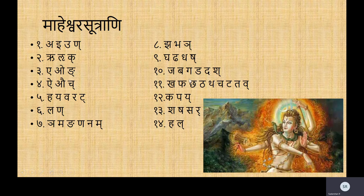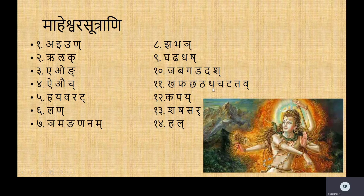Let's do one more example. For Khar: the first letter is Kha, and the last dead halanta is Ra. So everything within that, excluding the dead halanta, gives us Kha, Pha, Cha, Tha, Cha, Tha, Kha, Pha, Cha, Tha. Remove the Va, Ya, Ra, etc., because they are dead. Throw them away and you have the set that you want — you are retrieved with the set.